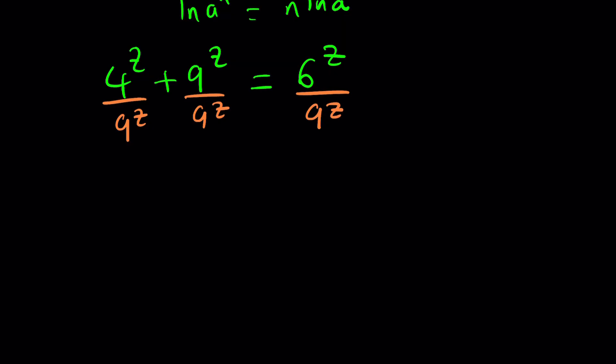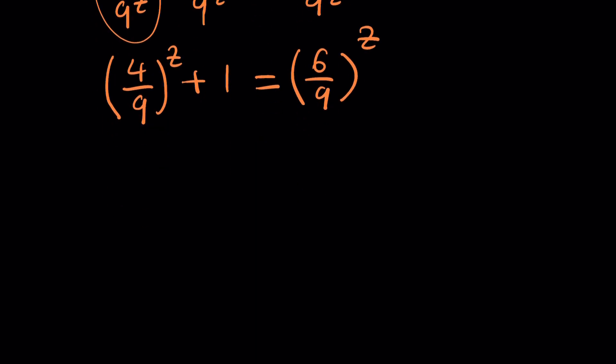Let's go ahead and divide everything by 9 to the power of z, and then it's going to give us good things. First of all, since these two expressions have the same exponent, we can write it as 4 over 9 to the power of z. Obviously this is going to be 1, and this is going to be 6 over 9 to the power of z. Obviously 6 over 9 can be simplified. They have a common factor which is 3. Divide by that, you get 2 thirds to the power of z. And then this side is going to be 4 over 9 to the power of z plus 1.